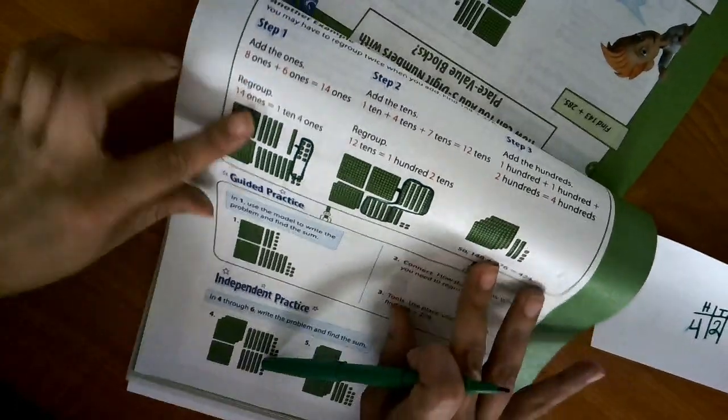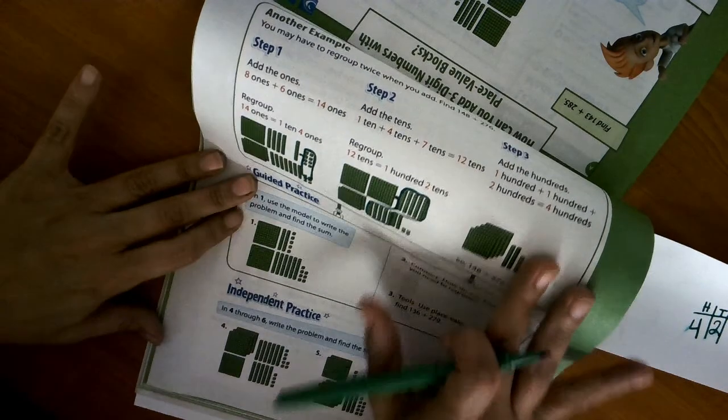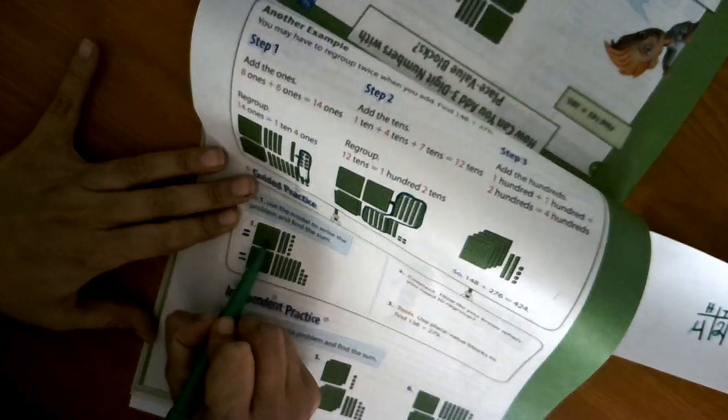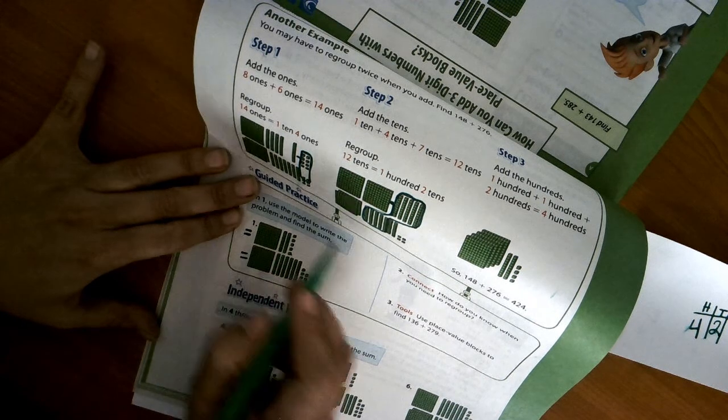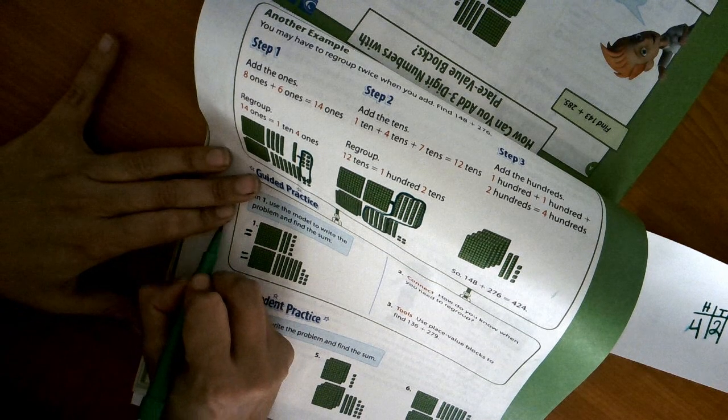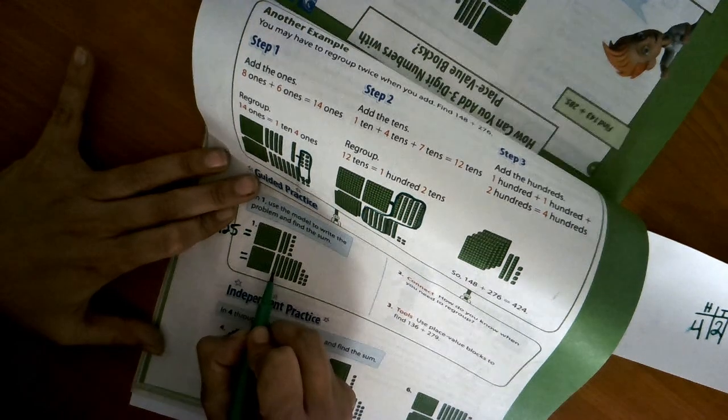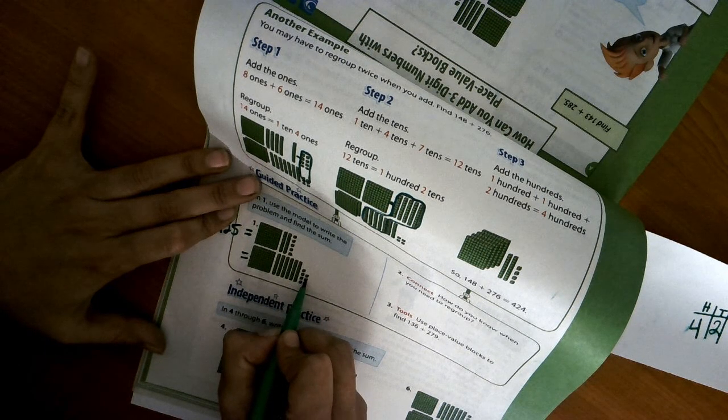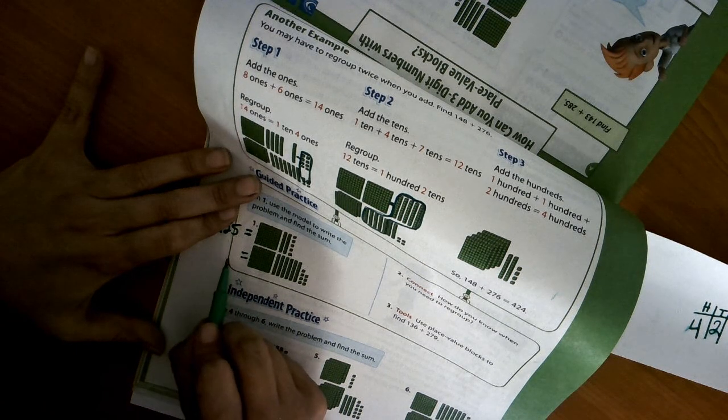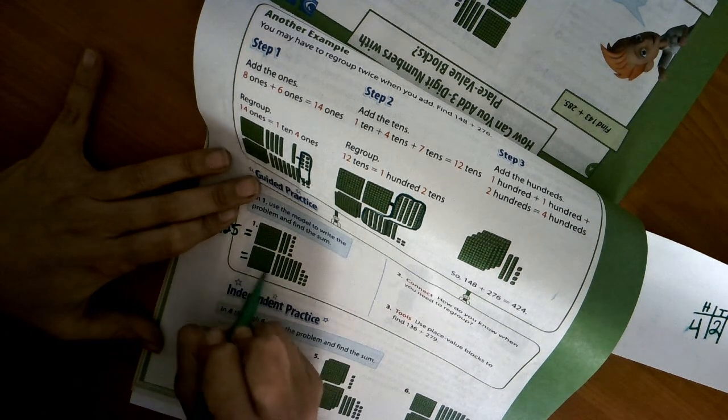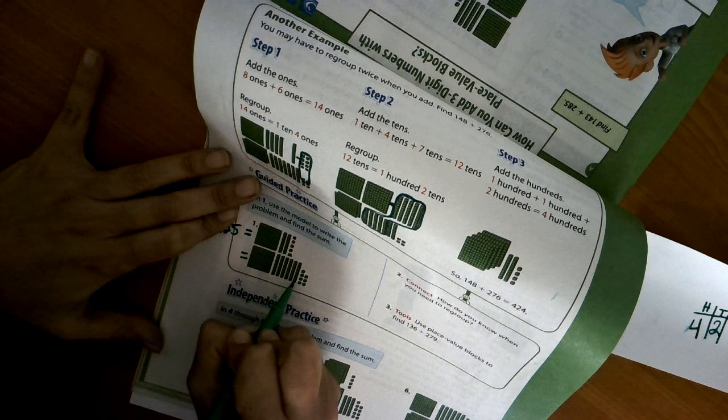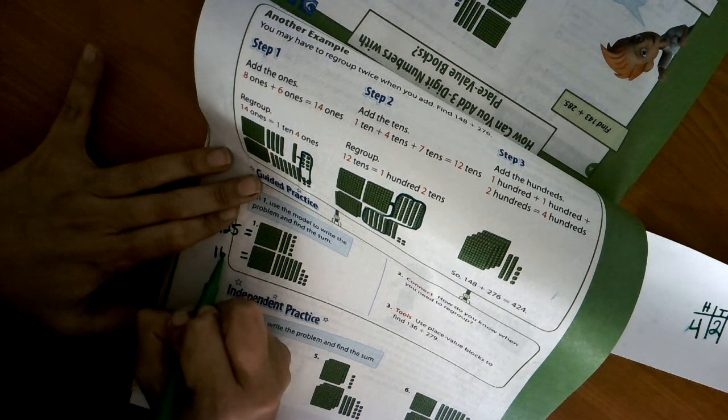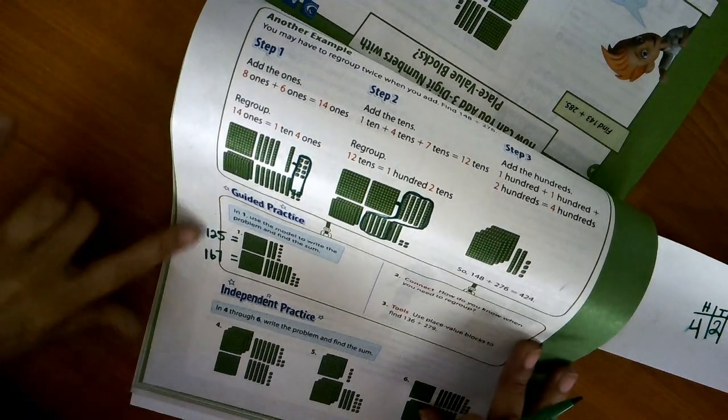You're going to be doing the same thing for these. So what I would do if I were you is I would write how much each number equals over here on the side. So like this one: 100, 10, 20, 21, 22, 23, 24, 25 is 125. And then this one: 100, 10, 20, 30, 40, 50, 60, and counting up to 67. Write your numbers next to the side.